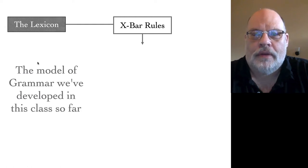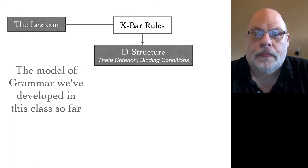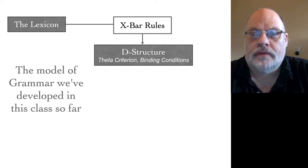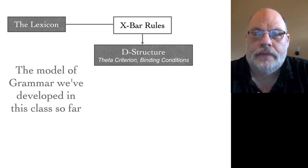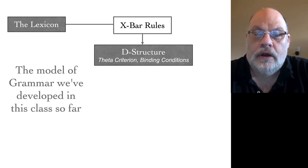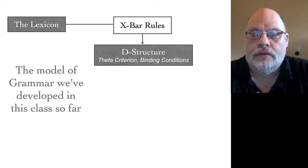The X-bar rules decide what's a complement, what's a specifier, what's an adjunct. And then they create what's known as the D-structure. The D-structure is essentially your complete sentence with every word in the position it would be put in by the X-bar rules according to the principles of the lexicon. The D-structure is then evaluated — once you create a D-structure, you look to make sure that certain constraints are met. For example, the theta criterion must be met at this level, so every DP in the structure must have a theta role. The binding conditions must be met, although we will argue later that some binding conditions might be met later in the structure. We know that the theta criterion is met at this level because it happens before we do transformations.